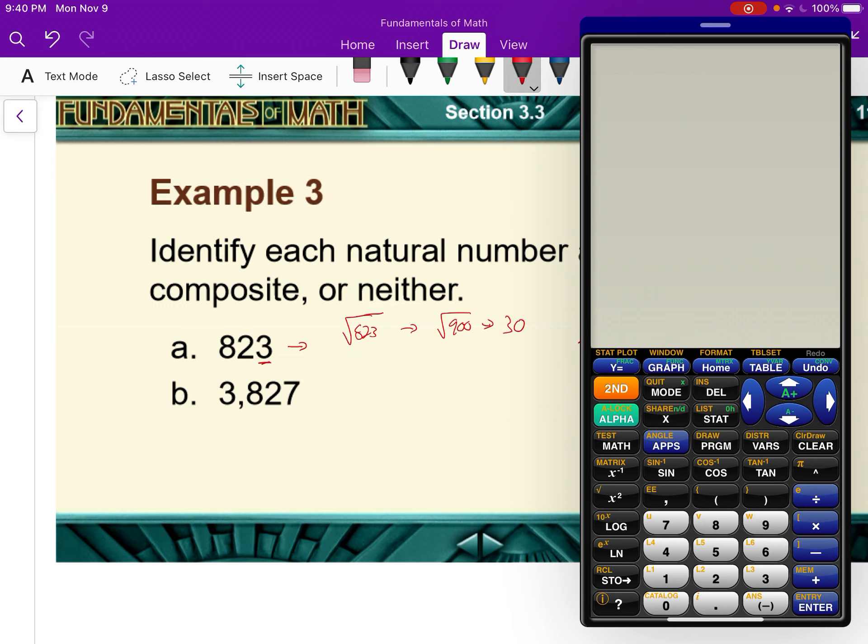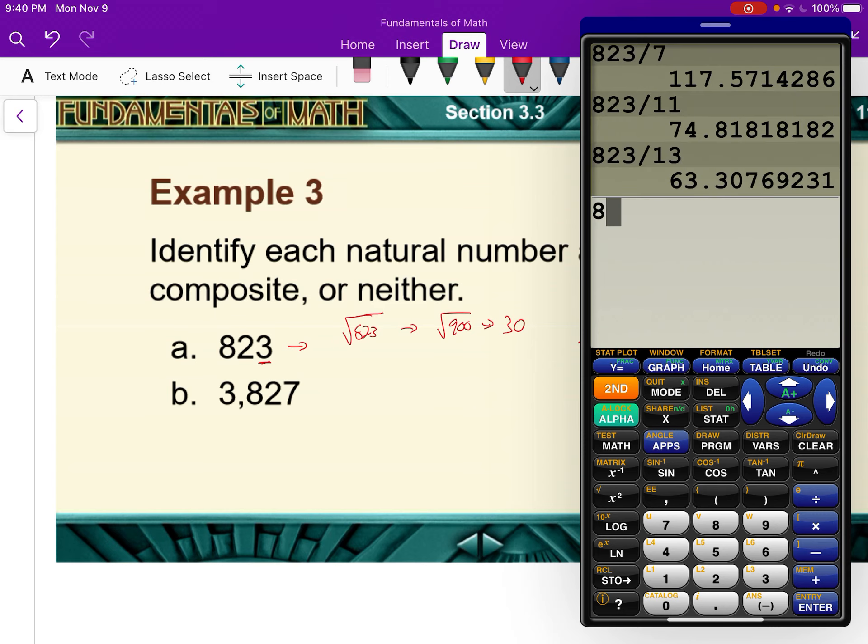So we can do 823 divided by 7. That doesn't turn out evenly. Next one was 823 divided by 11. 74.81, that doesn't go in evenly. 823 divided by 13. Nope.